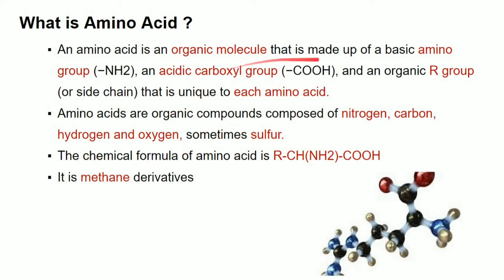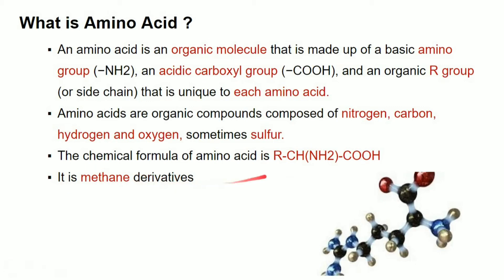If you look at amino acids, they have: amino groups, carboxyl groups, and R groups. These are the structure. The chemical formula of amino acids — if you look at this, methane is a type of gas. These are methane derivatives.